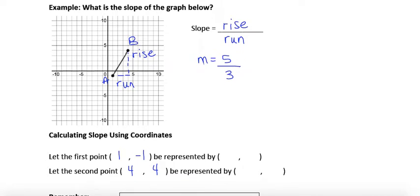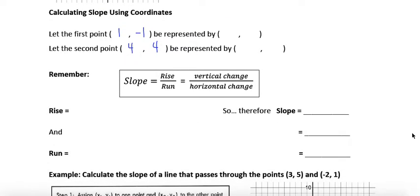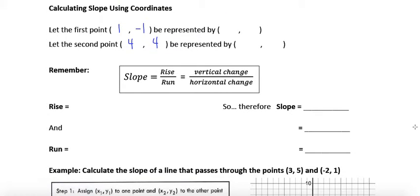Now that I've identified what the coordinates are from that graph, we're going to use that information to find the slope. So I'm going to let my first point be x1, y1, and my second point B, x2, y2.